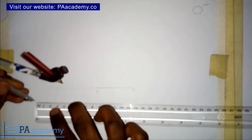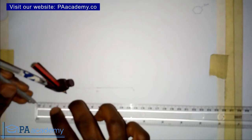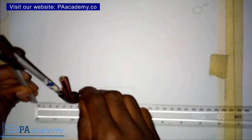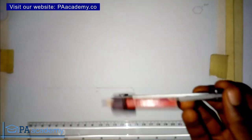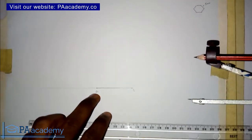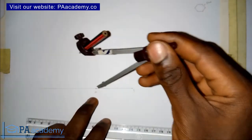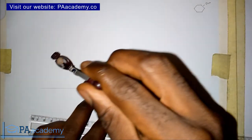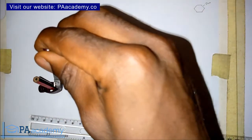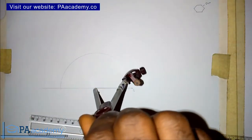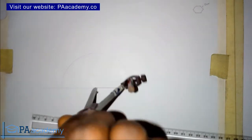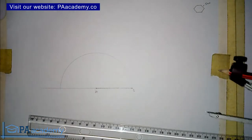The next thing I'm going to do is bring back my compass and draw a semicircle with the same radius of five centimeters, since we are working with five centimeters. I already have my compass set to five centimeters. I'll place it on point A and draw a semicircle.